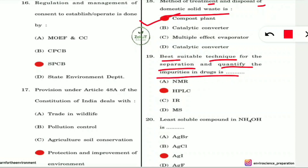Question 19: The best technique for separating and quantifying impurities in drugs is called what? The answer is HPLC — High Performance Liquid Chromatography. This technique separates and quantifies impurities in drugs and is mostly used for non-volatile solutes.